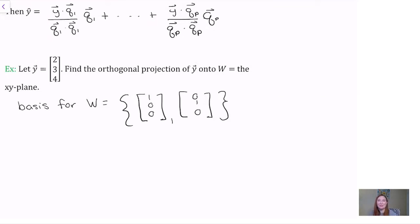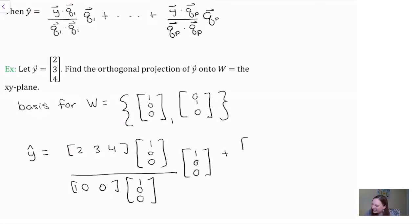We'll now get the orthogonal projection y hat by taking y dotted with the first basis vector, 1, 0, 0, over the first basis vector dotted with itself. That's just a scalar. This whole scalar multiplies the first basis vector. And then we add to that y dot e2 over e2 dot e2 times the second basis vector.